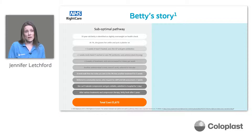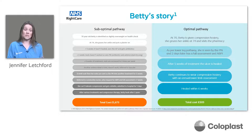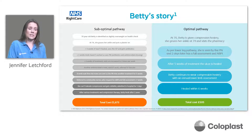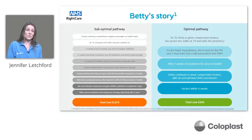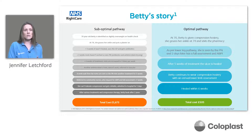The total cost of Betty's suboptimal pathway was £5,673. If we compare that to an optimal pathway of care: at 70 years old, when Betty was initially seen for her health check, she was given compression therapy. At 74, when she grazed her ankle, she went to visit the pharmacist and, as per the lower limb pathway, was seen by a practice nurse within a couple of days with a full assessment and ABPI. After five weeks the ulcer had healed, and she remained in compression therapy with an annual lower limb assessment — healing in six weeks at a total cost of £505.